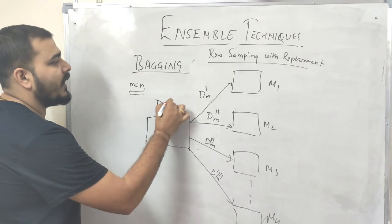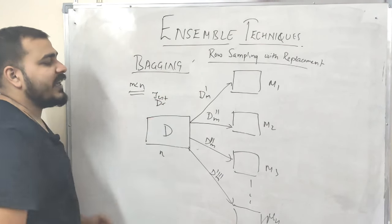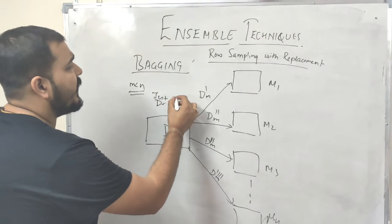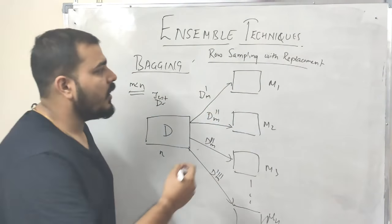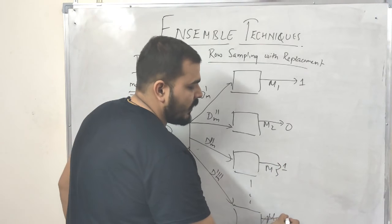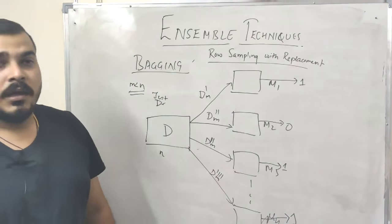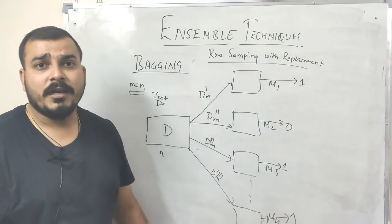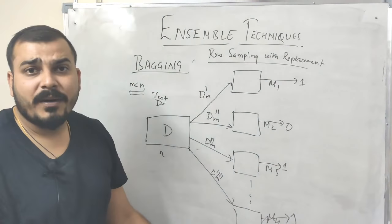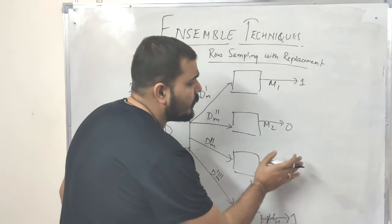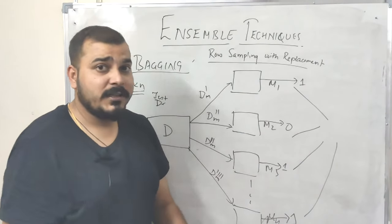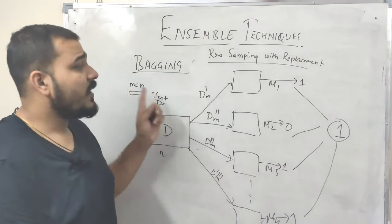After training is done, suppose from my test dataset I give new data and I'm trying to predict. Considering this is a binary classification problem: the test data goes to model one and it gives output as one, the second model gives output as zero, the third model gives output as one, and the fourth model also gives output as one. For this test data, we apply a voting classifier — meaning the majority vote given by the models will be considered. Most models are giving output as one, so one will be the output.